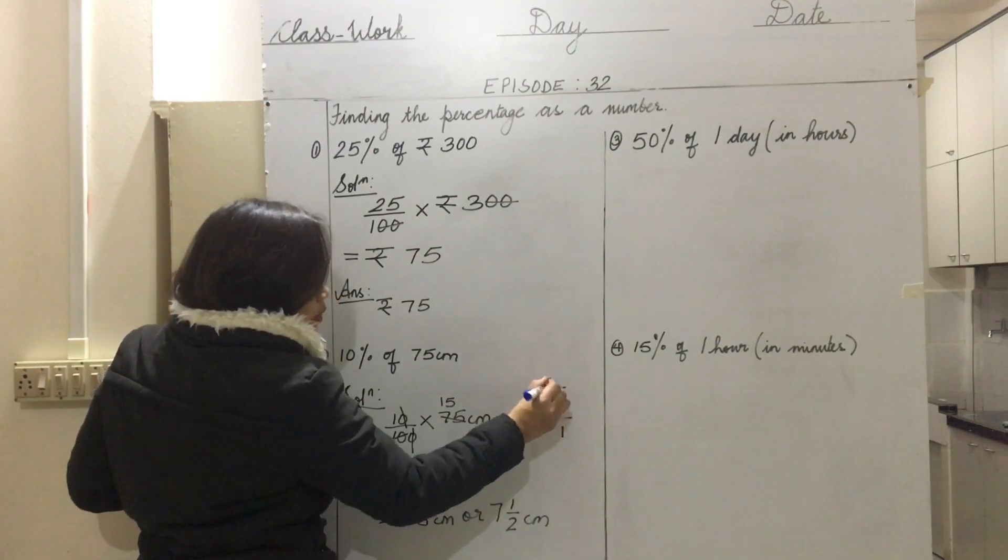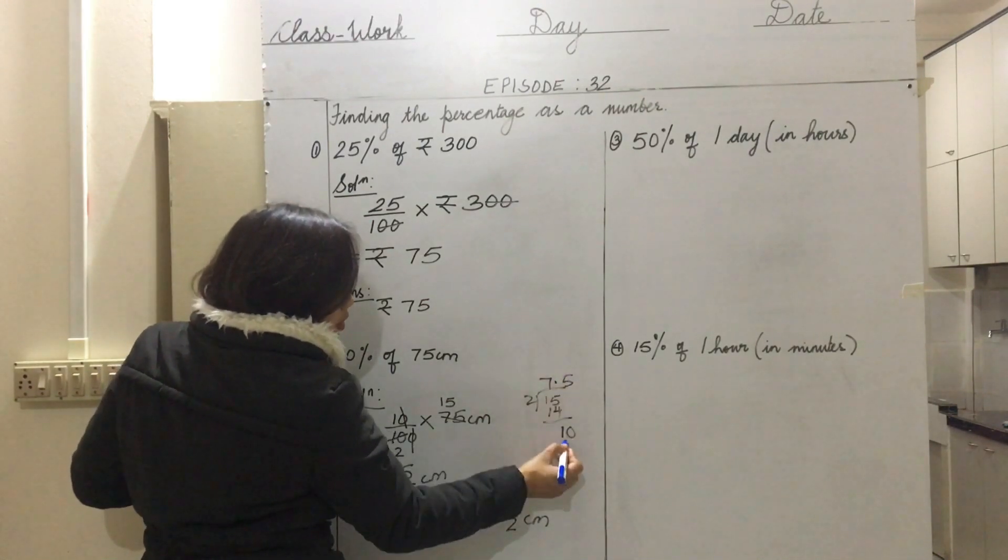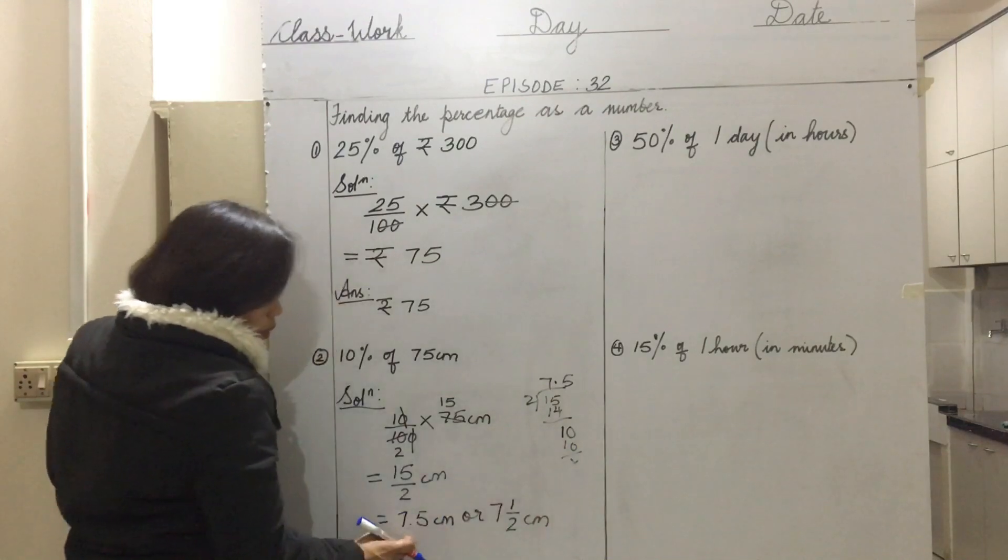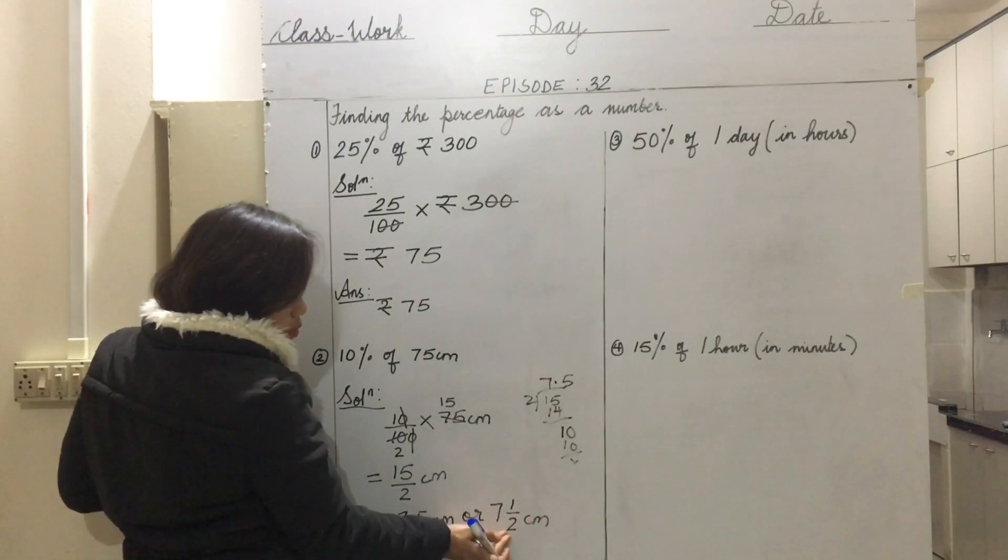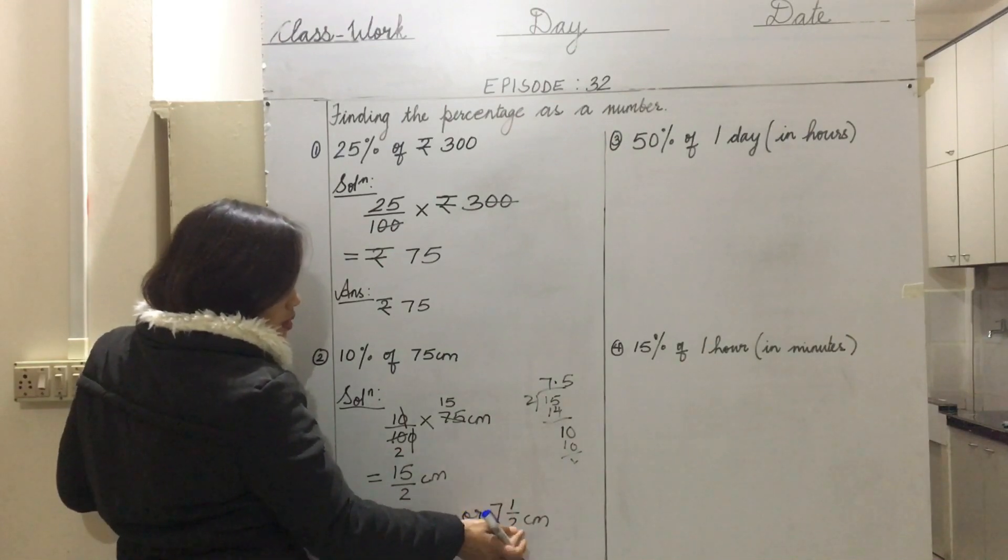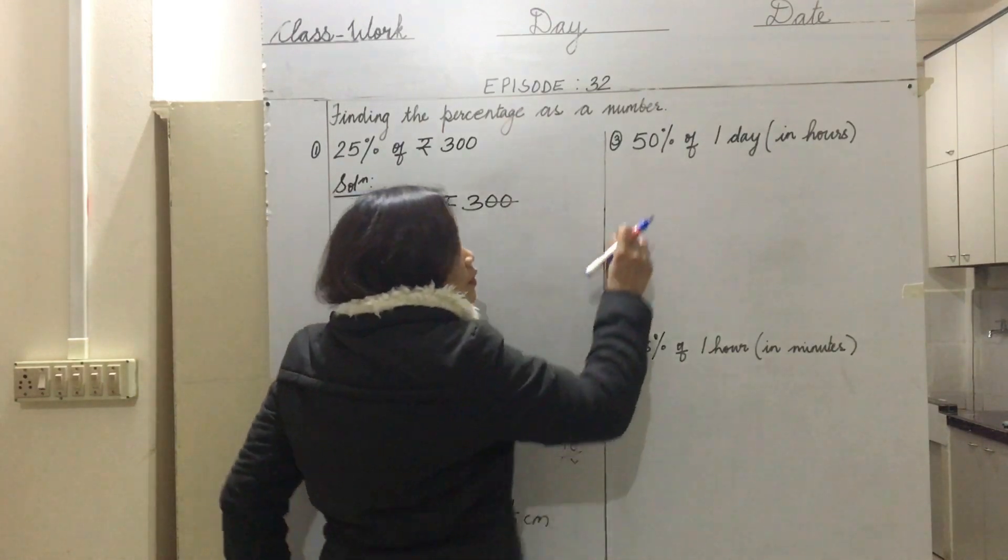So when we divide, we get 7.5, or you can convert it to mixed fraction, which would be 7 and 1 by 2 centimeters. Both are correct.